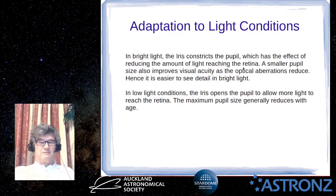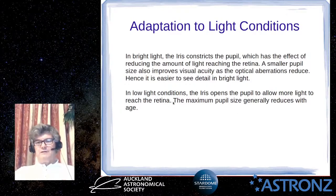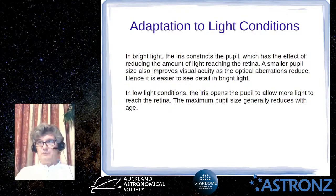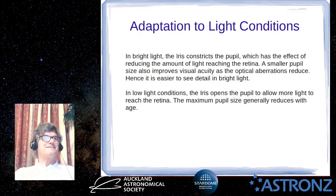In low light the iris opens up so more light can reach the retina, but as you get older the maximum pupil size actually reduces. Young people can generally have a bigger pupil, which effectively means you can see better in low light when you're younger — unfortunate for us older folks.